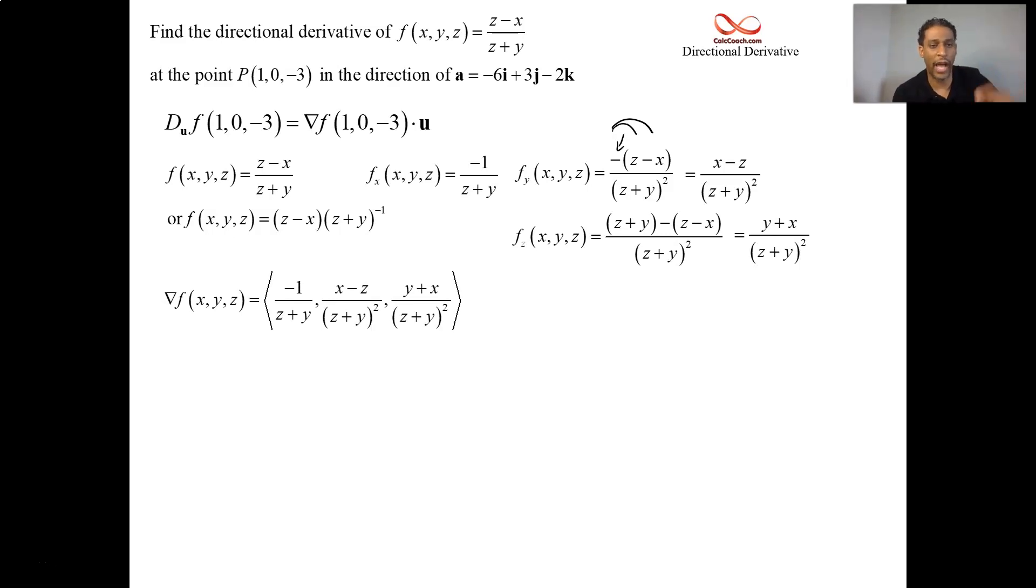And now we're going to plug in x is 1 and y is 0 and z is negative 3. The denominator each time. Well, the first denominator is the sum of the z and the y. So that's a negative 3. But then you square it on the other guys. So the negative 1 on top of negative 3 makes the first component 1 third. And then the next components have 9 as their denominators. And we're taking x minus z. So that's a 4. And then we're taking y plus x. So that's a 1. So 1 third, 4 ninths, 1 ninth, half of your dot product. Most of the work is already done.